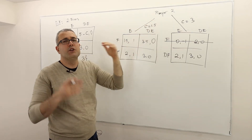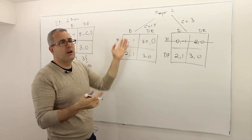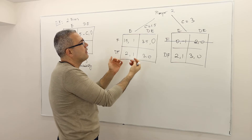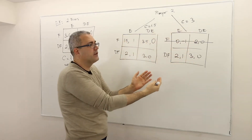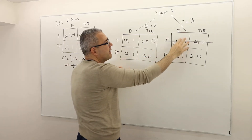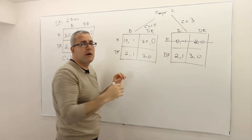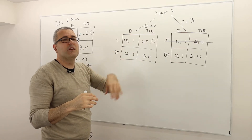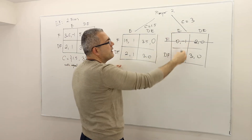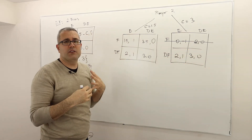Why? Because player 2 chooses enter or don't enter, but when she chooses enter, she isn't sure whether this is the payoff she should be considering or this is the payoff she should be considering. A strictly dominant strategy means whatever my opponent does, it should be giving me a strictly higher payoff. Here, however, entry means -1 or 1, so therefore it's not always better than don't enter.